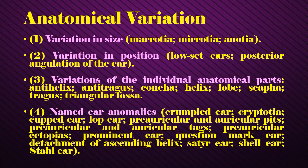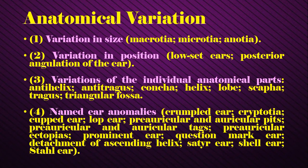There are various anatomical variations of the ear. Variation may involve size — macrotia, microtia, anotia — or positional variation such as protruding ears and posterior angulation of the ear. Variations of the individual anatomical parts include the anti-helix, anti-tragus, concha, helix, lobe, scapha, tragus, triangular fossa, and some named ear anomalies.